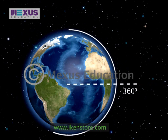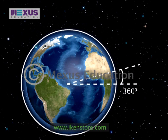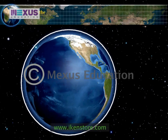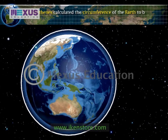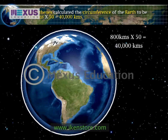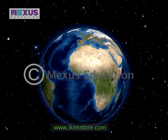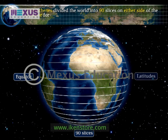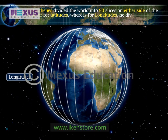There are 360 degrees in a circle, so 7 degrees is about 1/50th of the circumference of the circle. It means that the distance from Cyene to Alexandria, 800 kilometers, is equal to 1/50th of the circumference of the Earth. Eratosthenes thus calculated the circumference of the Earth to be 800 kilometers into 50, which equals 40,000 kilometers. At the same time, Eratosthenes divided the world into 90 slices on either side of the equator for latitudes. For longitudes, he divided the world into 360 degrees like the segments of an orange.